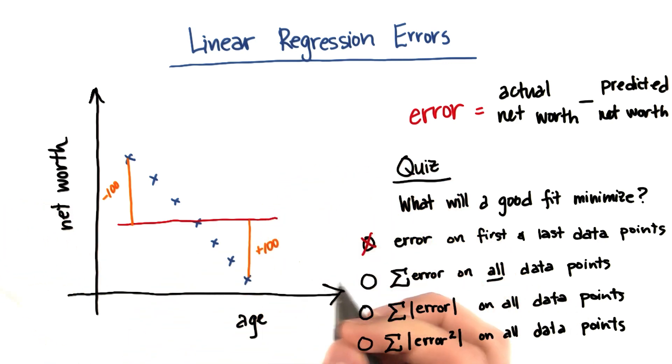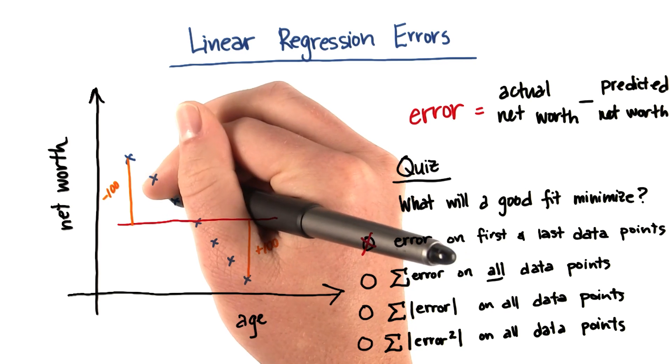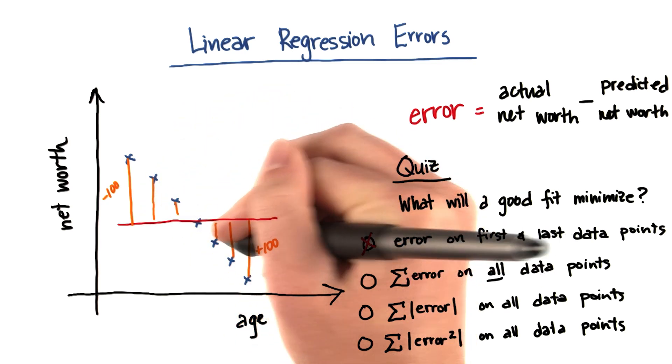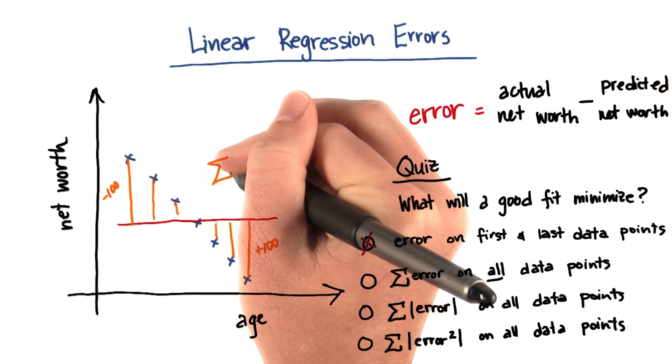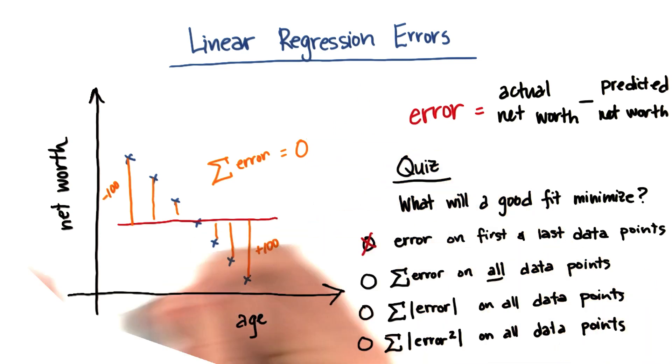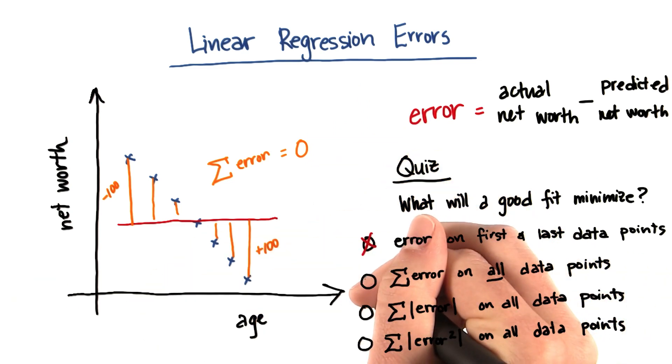then these two will cancel each other out. And likewise for this point, this point, this point, and this point. So the sum of the error in this case will actually be 0, even though it's a terrible fit. That's why we usually don't use the sum of the errors.